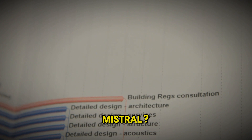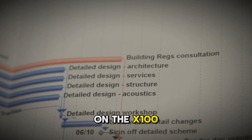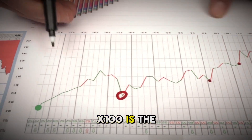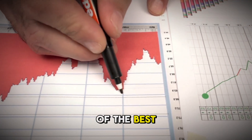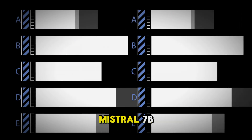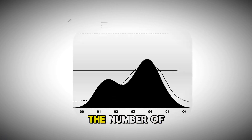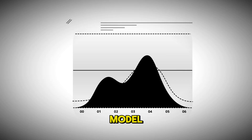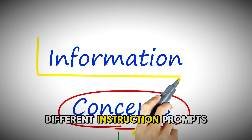So, what is MISTRAL? MISTRAL is a large language model based on the X100 architecture. If you remember, X100 is the architecture behind the FLAN 1-17B model, which was one of the best-performing models last year. MISTRAL comes in three different sizes: MISTRAL-7B, MISTRAL-15B, and MISTRAL-30B. These refer to the number of parameters in each model — so we have a small, medium, and large model. Each of these models are fine-tuned on different datasets and different instruction prompts.